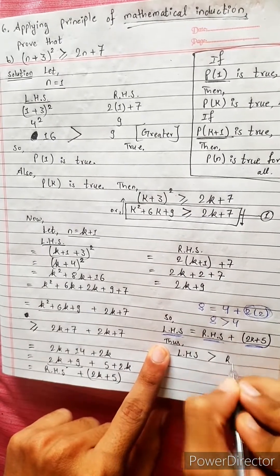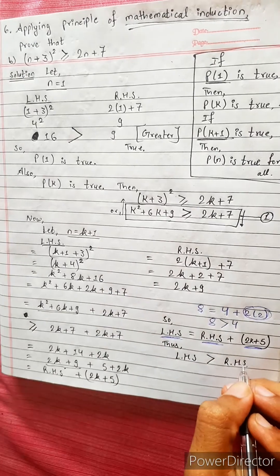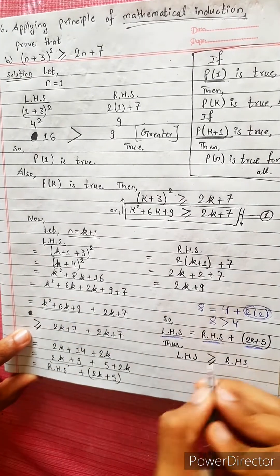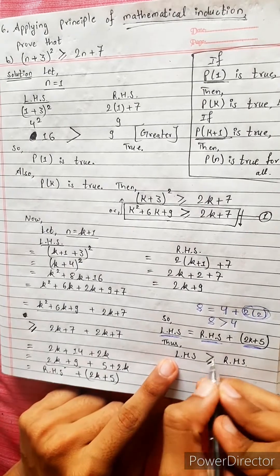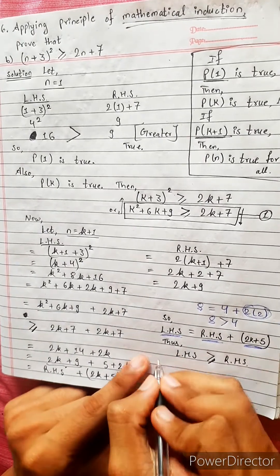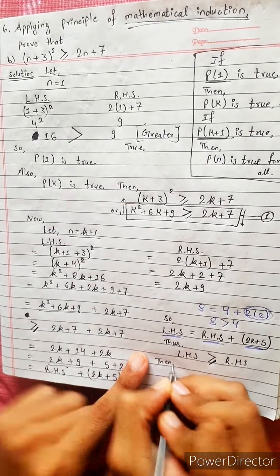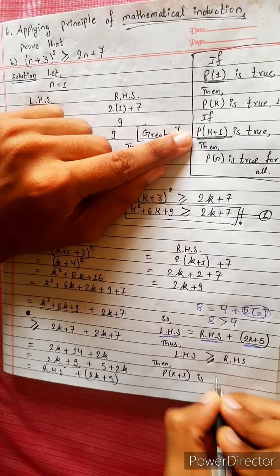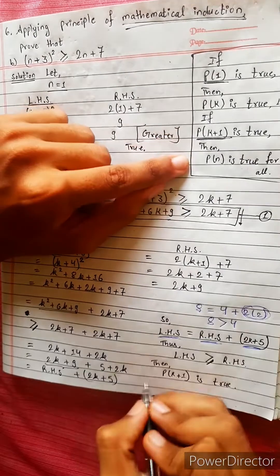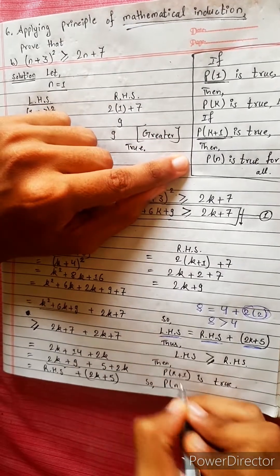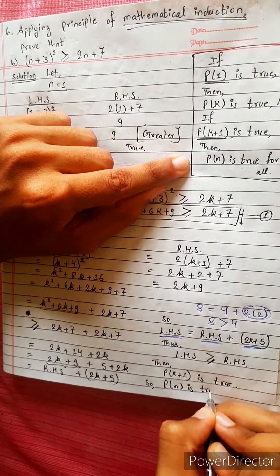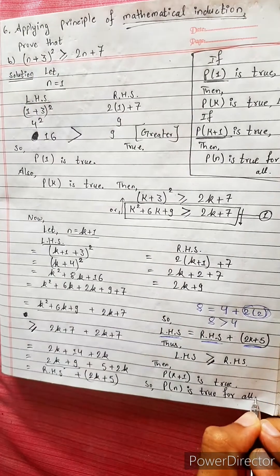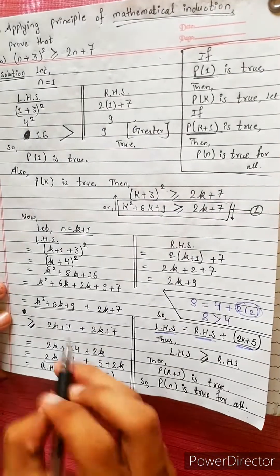LHS is greater than RHS. We can see that LHS equals RHS, and if we add equal to RHS, LHS is greater than RHS. Therefore, Pk plus 1 is true, so Pn is true for all natural numbers.